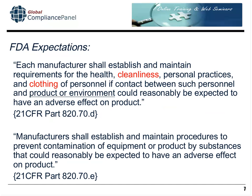What are FDA expectations? First and foremost, they state that each manufacturer shall establish and maintain requirements for the health, cleanliness, personal practices, and clothing of personnel if contact between such personnel and product or environment could reasonably be expected to have an adverse effect on product. They further state that manufacturers shall establish and maintain procedures to prevent contamination of equipment or product by substances that could reasonably be expected to have an adverse effect on product — again supporting the need to establish and maintain clothing requirements for personnel.